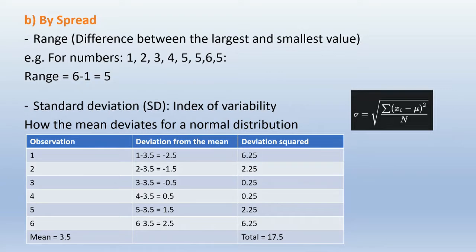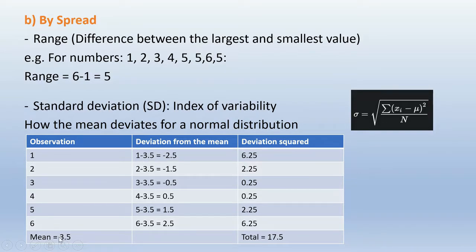How do we calculate the standard deviation? If we have observations from 1 to 6, their mean is 3.5. We got the mean by adding up the values divided by the total number of observations. We then get the deviations from the mean for each observation — for example, 1 minus 3.5 equals negative 2.5, 2 minus 3.5 equals negative 1.5, negative 0.5, and so on.